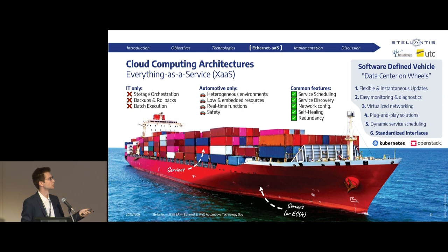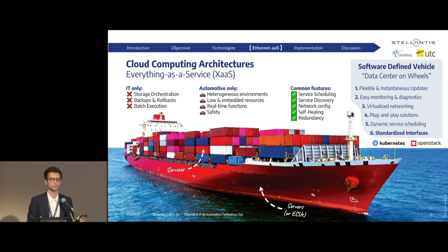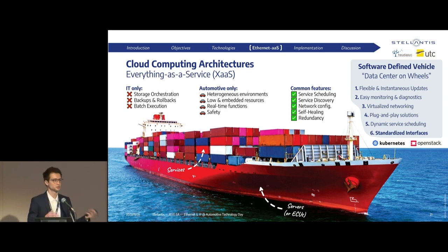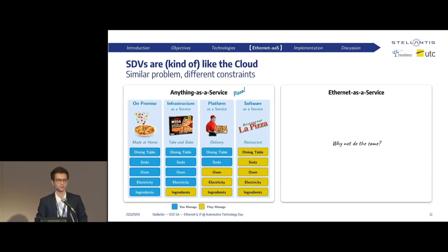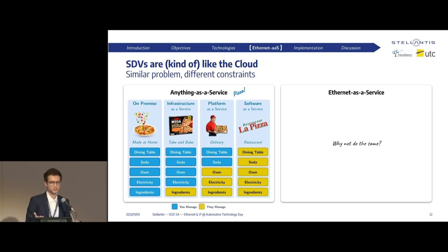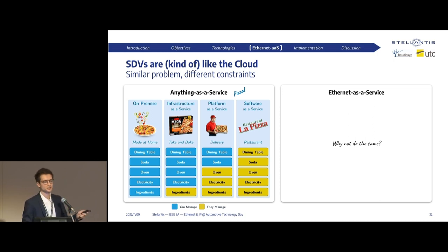As an example, there's Kubernetes, which is one of the main infrastructure management systems in the cloud. I'll present later how we could take inspiration from it. The secret ingredient they have is what they call anything-as-a-service, and I'd like to explain it with a small example using pizza.